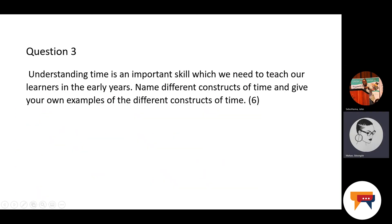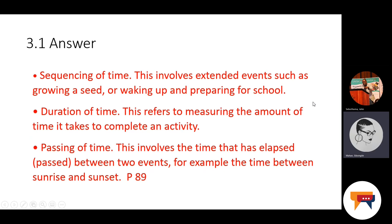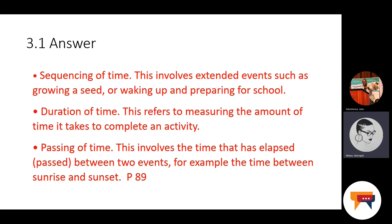Question three: Understanding time is an important skill which we need to teach our learners in the early years. Name the different constructs of time and give your own examples. The first is the sequencing of time — this involves extended events such as growing a seed or waking up and preparing for school. The second is the duration of time, which refers to measuring the amount of time it takes to complete an activity. The third is the passing of time — this involves the time that has elapsed between two events, for example the time between sunrise and sunset. More information is on page 89.